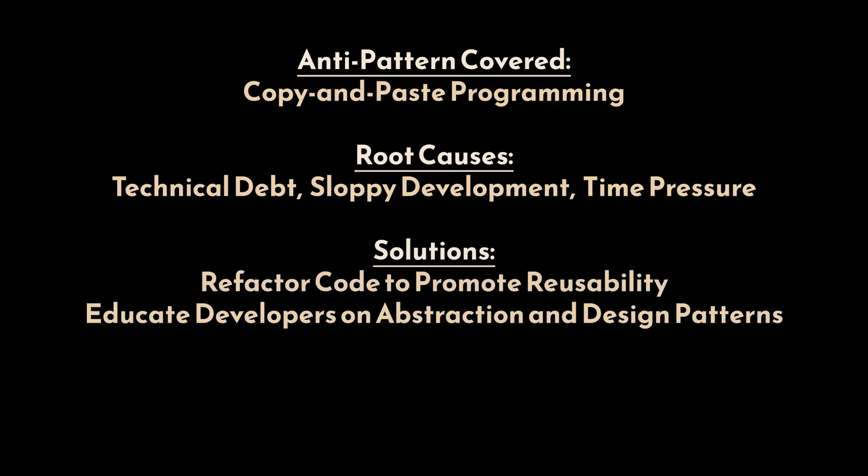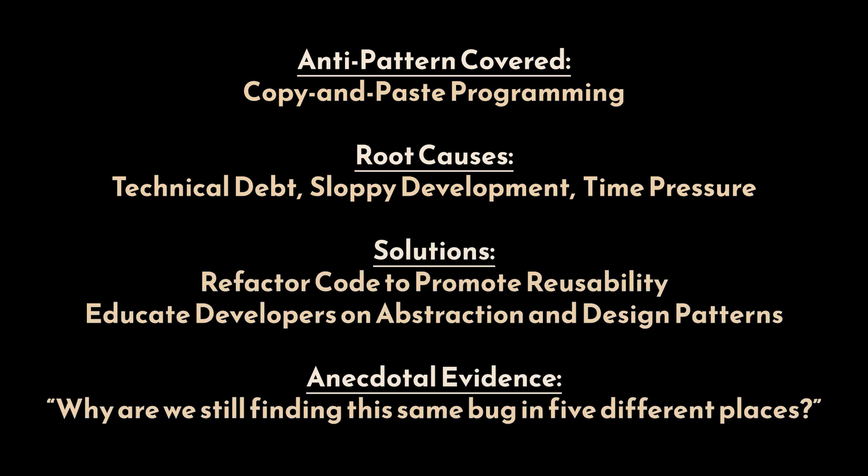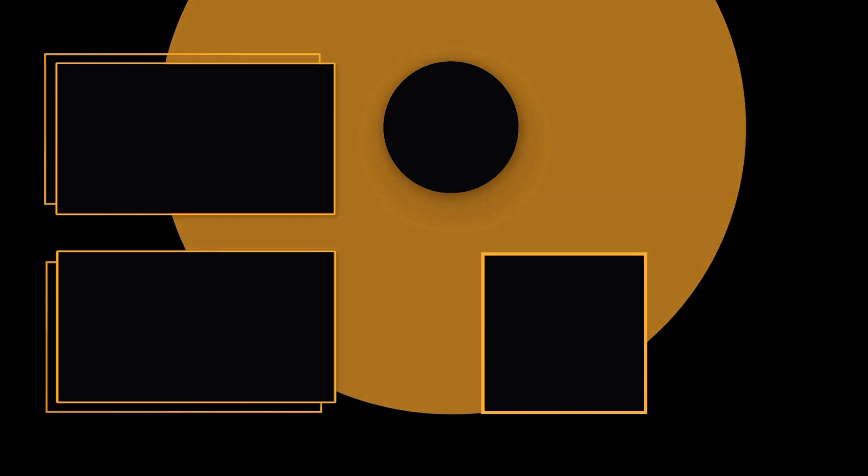In conclusion, while copy and paste programming might seem like a quick fix in the short term, it introduces significant long-term problems. Recurring bugs, code bloat, and high maintenance costs are just a few of the issues that arise when developers duplicate code instead of refactoring it for reuse. The solution lies in moving towards black box reuse, where modular components are created and reused through well-defined interfaces. By refactoring duplicated code and implementing proper configuration management and code review practices, organizations can improve code quality, reduce maintenance costs, and create software that is easier to scale.